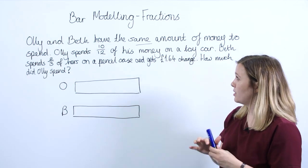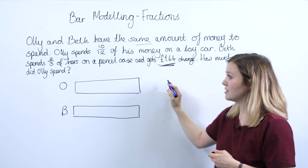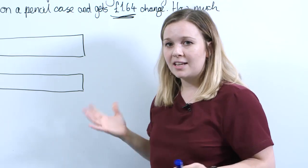The next thing we want to do is find out what information we know. So we know that Beth got £1.64 change after spending 2/3. At this point you'd want to say to your pupils, how can we represent that on Beth's bar?